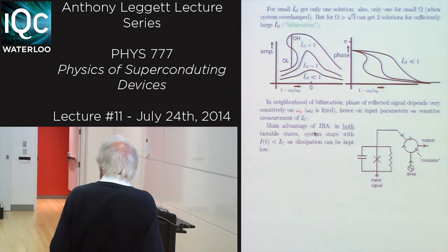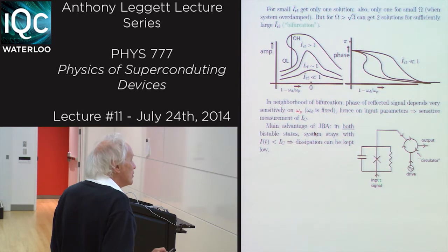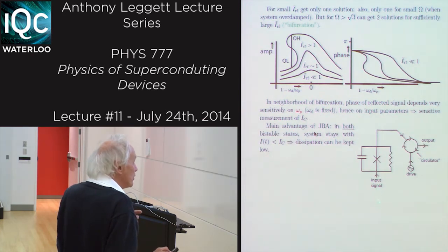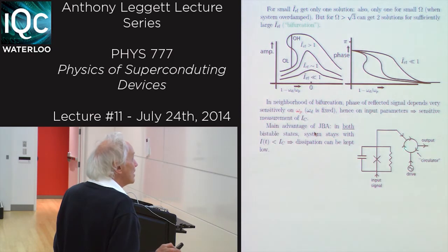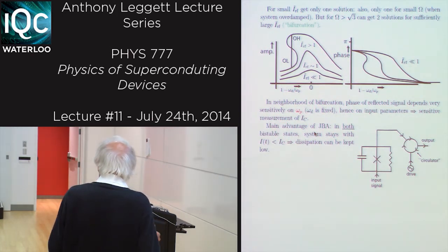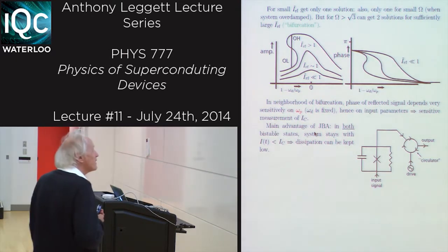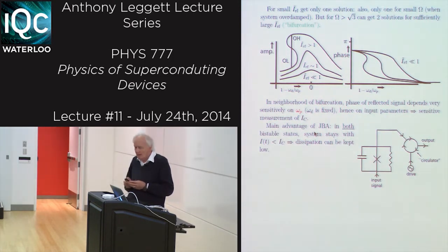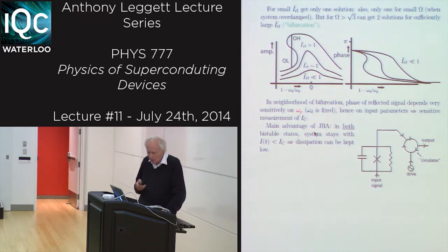Crudely speaking, what you do is to put your input signal into the basic circuit and then combine it with your drive in a circulator to get an output signal, which you then heterodyne with your input signal. Although this really has nothing much to do with the quantum information aspects of Josephson qubits, it has been a very useful measurement tool.